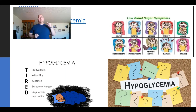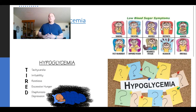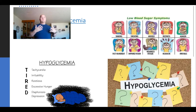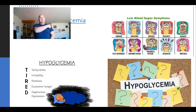Type 1 is our insulin deficient — the pancreas is basically shut down. Type 2 is our insulin resistant — stop, insulin can't get through. But both can present with hypoglycemia and hyperglycemia. When someone is hypoglycemic — hypo meaning low sugar in the blood — they're going to be tachycardic, irritable, restless, hungry, sweaty, and pale. Our two main treatments are glucose if they can swallow and follow commands, and glucagon — one milligram intramuscular — if they can't swallow and their blood sugar is low.